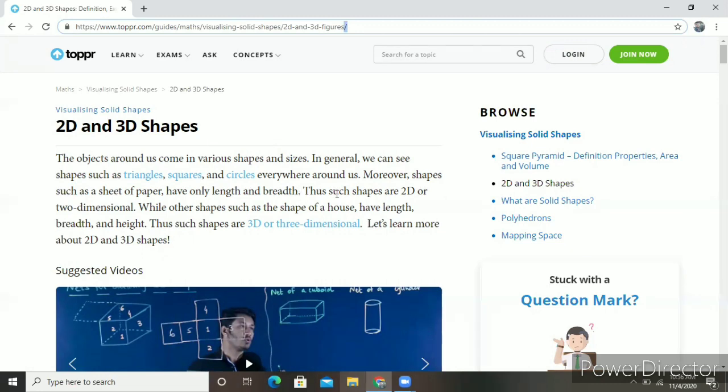Shapes such as a sheet of paper have only length and breadth. Such types are 2D or two-dimensional. While other shapes such as the shape of a house have length, breadth, and height. Thus, these shapes are 3D or three-dimensional. Now we will see the difference between 2D and 3D with the help of a few examples.